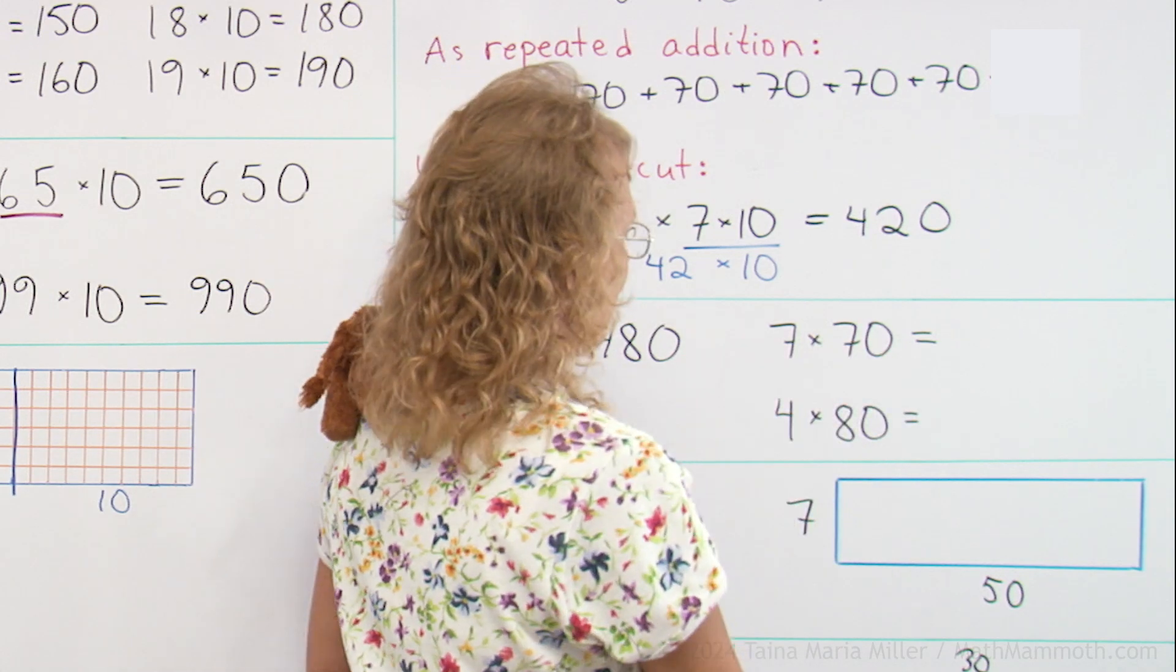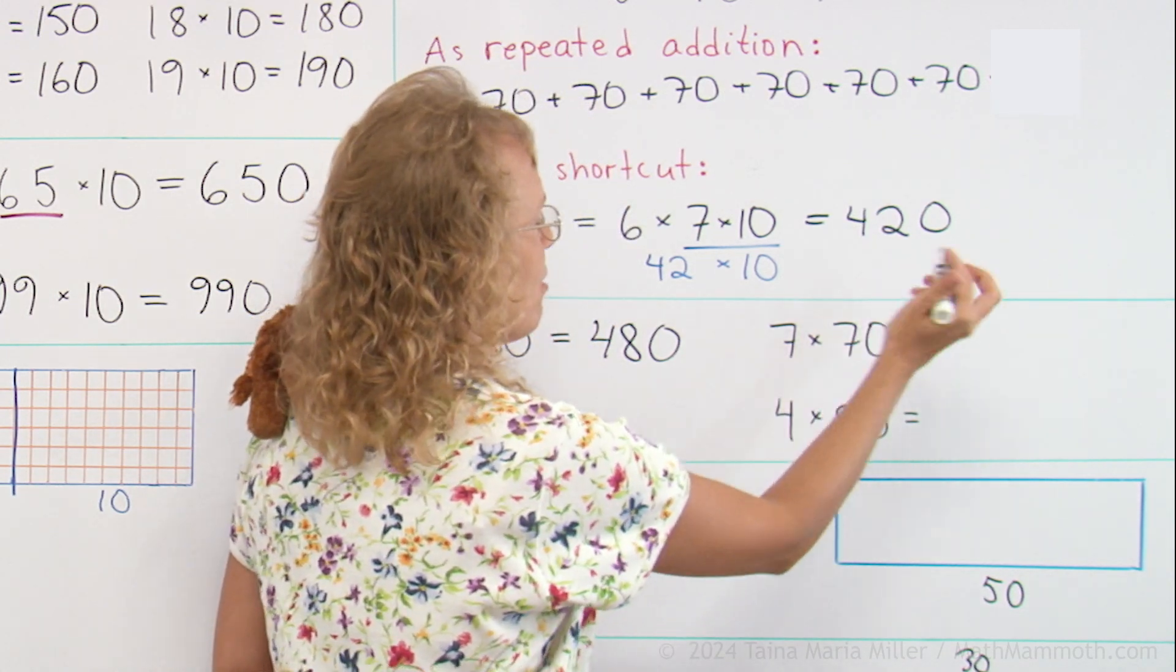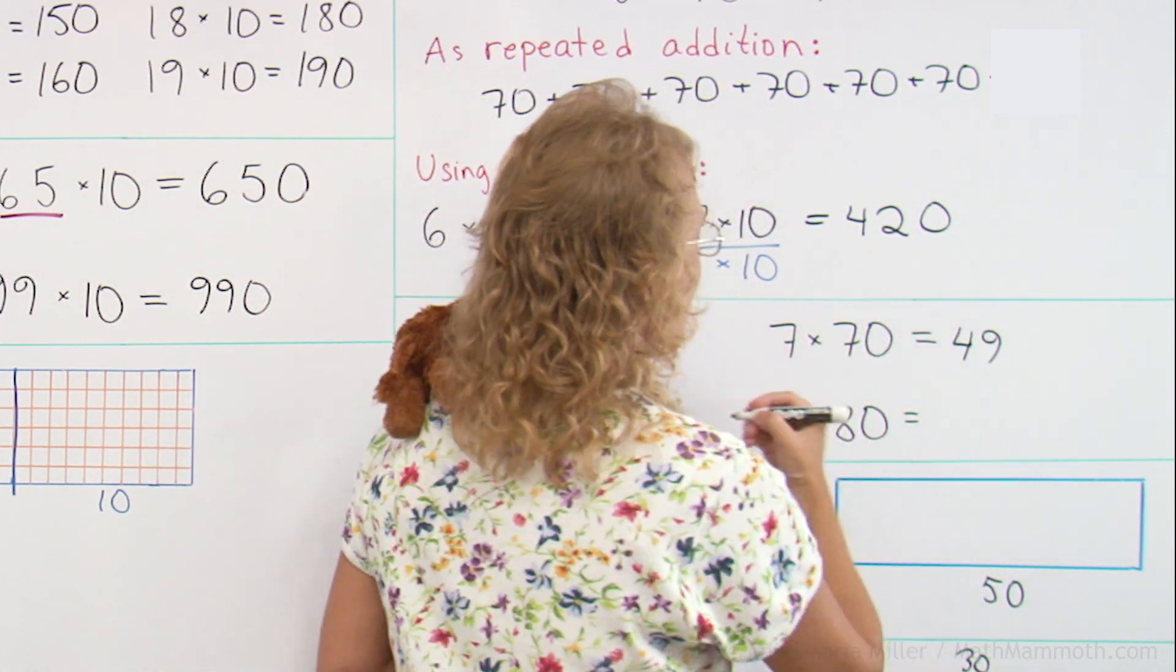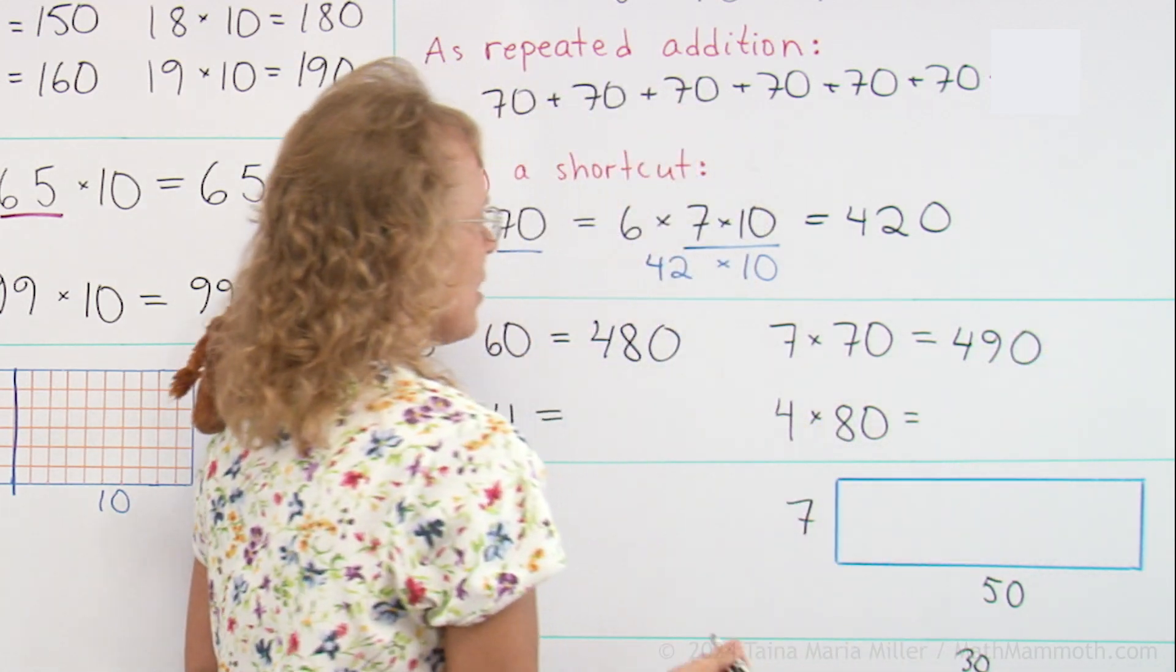7 times 70. 7 times 7 first. It's 49. And then a 0.